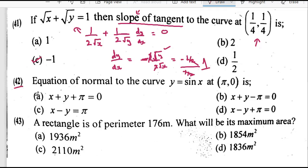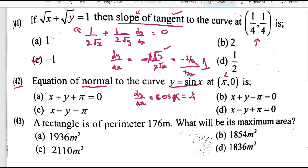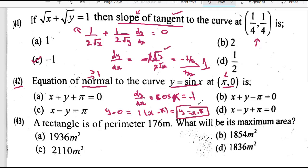The next question asks for the equation of the normal to the curve y equals sin x at x equals pi. First we find dy/dx which is cos x, and cos pi equals minus 1. This is the slope of the tangent, not the normal. The slope of the normal is the negative reciprocal: since tangent slope times normal slope equals minus 1, the normal slope is 1. Using this slope and the point on the curve, we find the equation of the line. Checking the options, C is the correct answer.